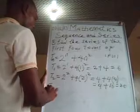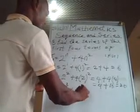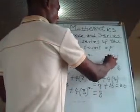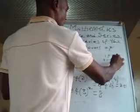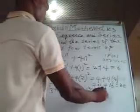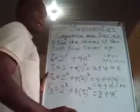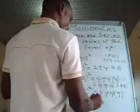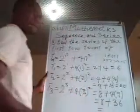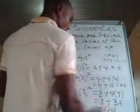Now t3 is given as 2 raised to the power 3 plus 4 times 3 squared. 2 raised to the power 3 is 2 times 2 times 2, which gives us 8. And 3 squared is 3 times 3 which gives us 9, so 4 times 9 gives us 36. Now 8 plus 36 gives us 44.